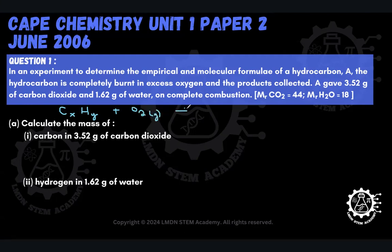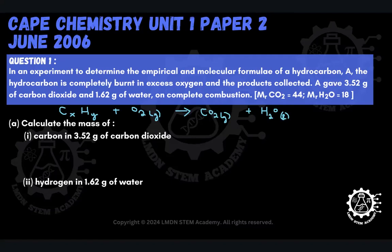Upon complete combustion, we will obtain carbon dioxide gas and steam. That's the general description of what's going on in this combustion of hydrocarbon A. Now in part A, we are asked to calculate the mass of carbon that is present in the 3.52 grams of carbon dioxide that gets formed.